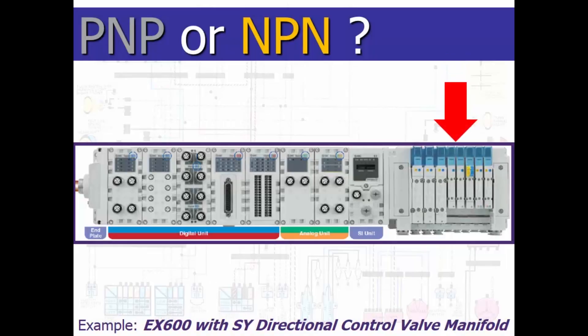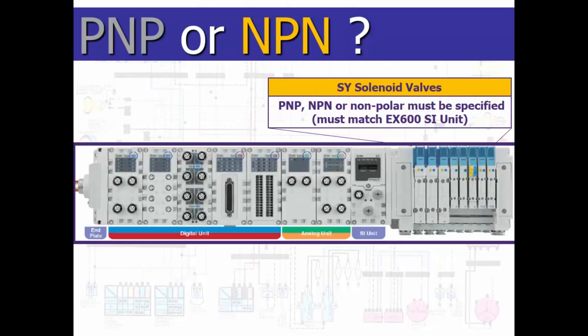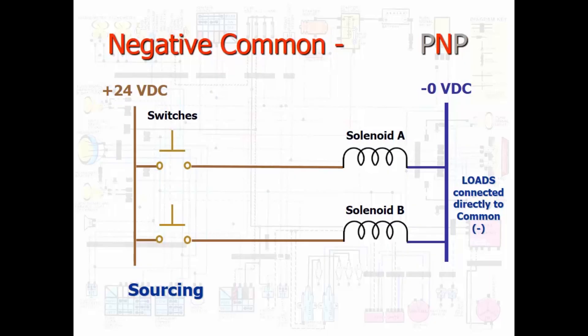Let's use this SY valve manifold and its EX600 serial interface controller. There are actually three polarity options for the solenoid valves: PNP, NPN, or they can also be non-polar. The solenoids must match the polarity of certain components on the circuit.